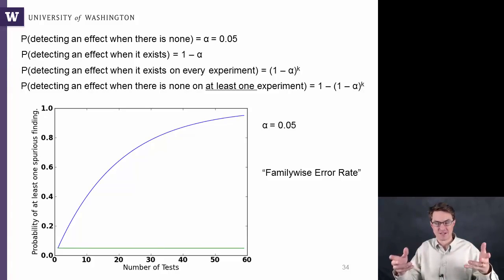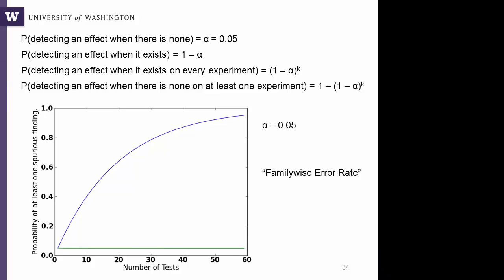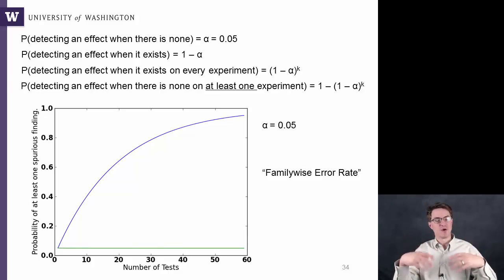Assuming that they're independent. It's okay to multiply probabilities together if those probabilities are independent. Finally, the probability of detecting an effect where there is none on at least one experiment is 1 minus that total. So first we build up the probability of being perfect, and then 1 minus that is the probability of not being perfect, of making at least one mistake.